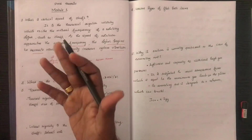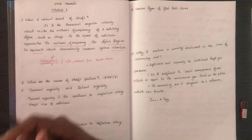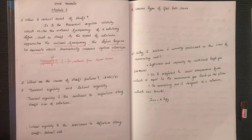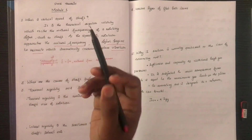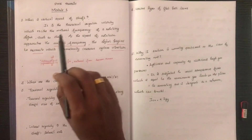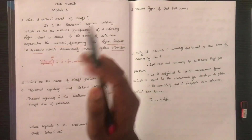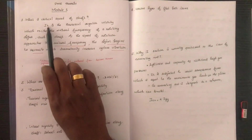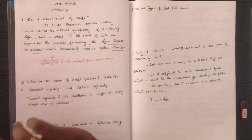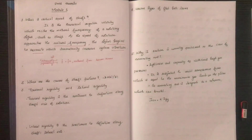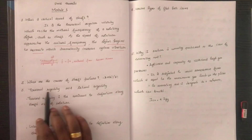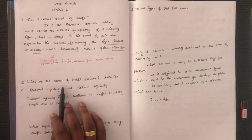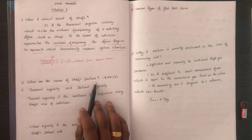That speed up to which the shaft can be operated without producing high amplitude of vibration is known as the critical speed of the shaft. You have to understand the capacity and maximum speed of the shaft. What are the causes of shaft failure?